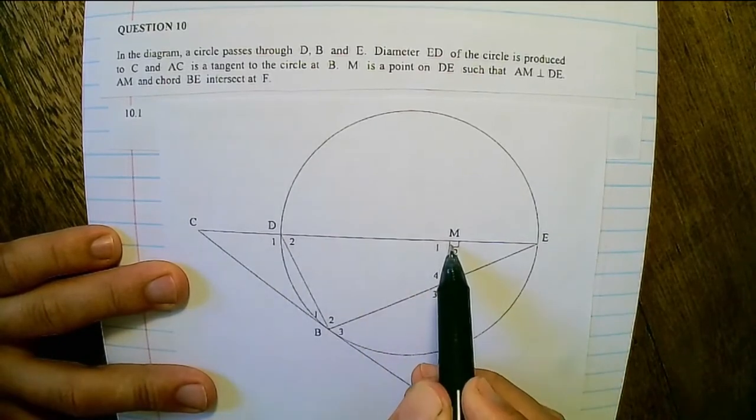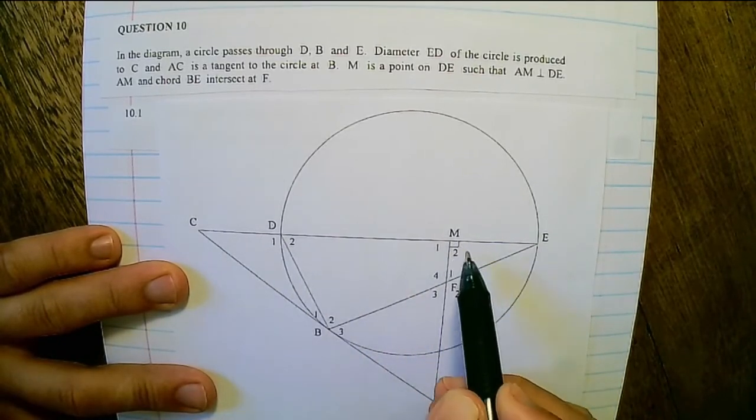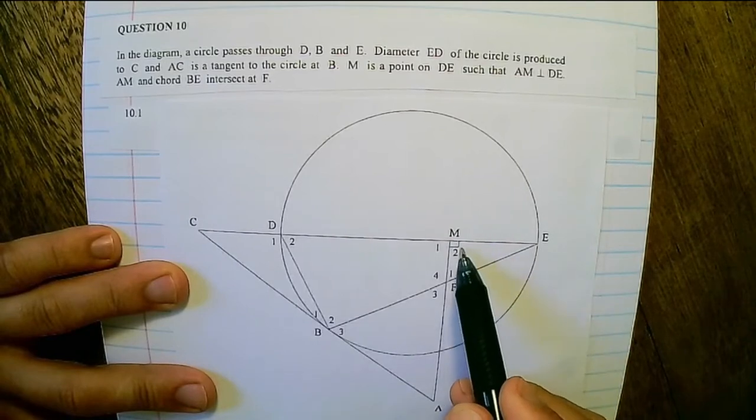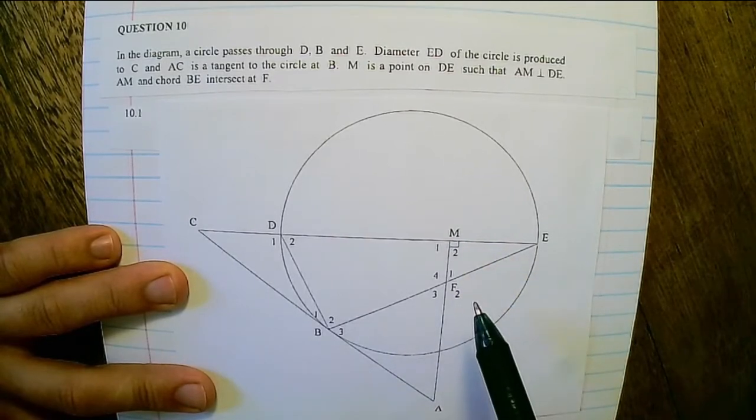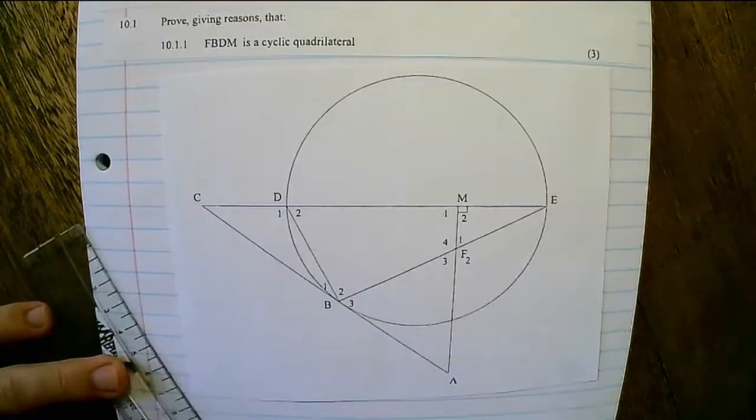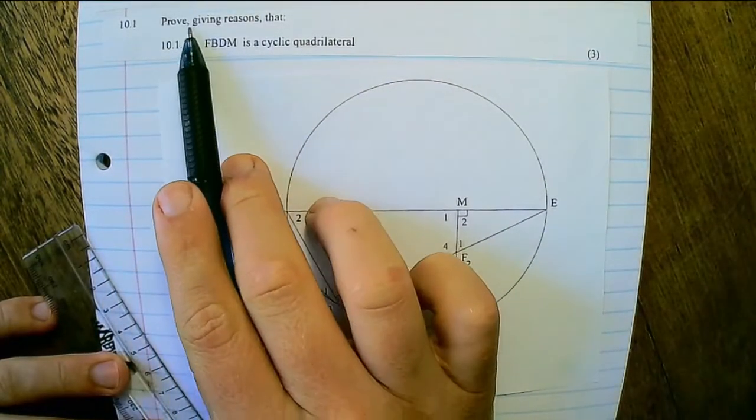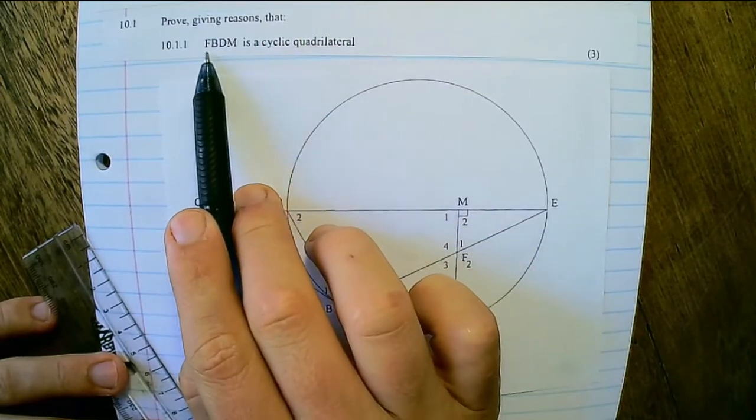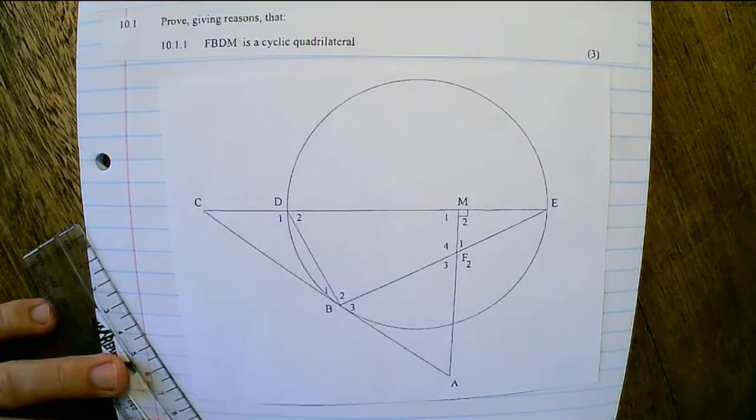M is a point on DE such that AM is perpendicular to DE. AM and chord BE intersect at F. 10.1.1: Prove, giving reasons, that FBDM is a cyclic quadrilateral.